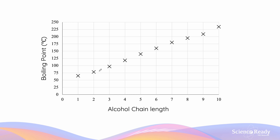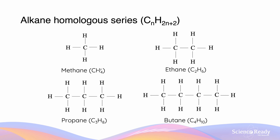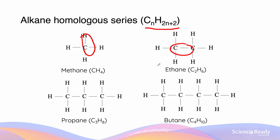The boiling point increase can be attributed to the fact that the alcohol is now able to form more dispersion forces as there is a longer hydrocarbon tail. We'll now look at some examples of different types of homologous series. Alkanes are compounds which consist of only simple carbon-to-carbon and carbon-to-hydrogen bonds. These bonds exist in almost all organic compounds, and alkanes do not have unique functional groups. They have the general formula CnH2n+2, and with each subsequent member of the series, there is an extra CH2 group added to the end.